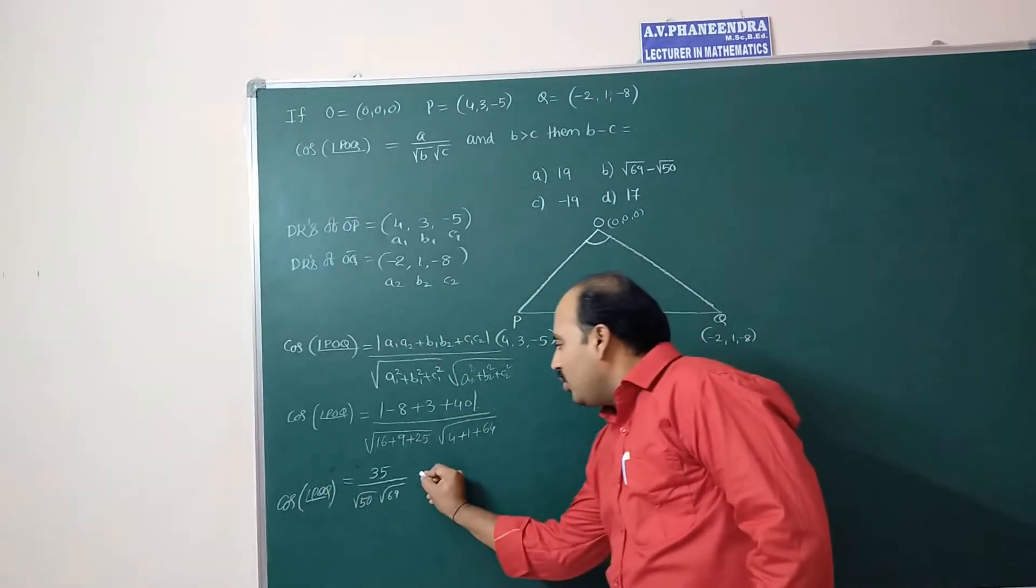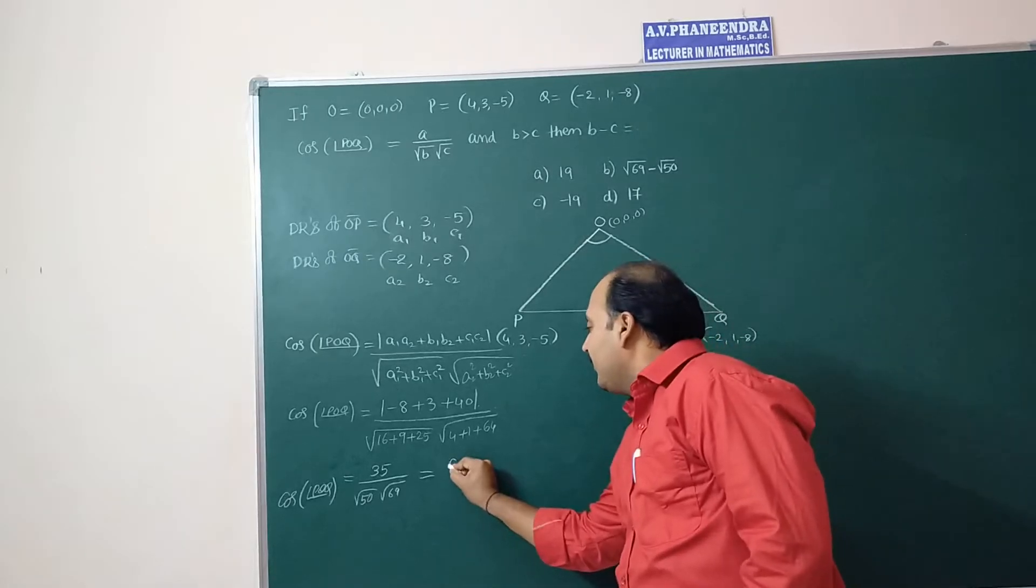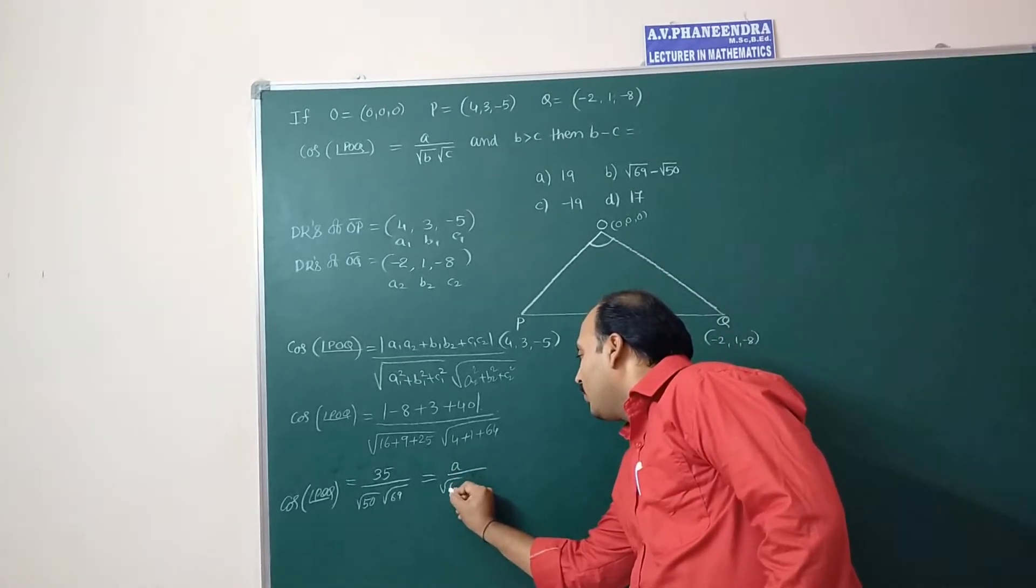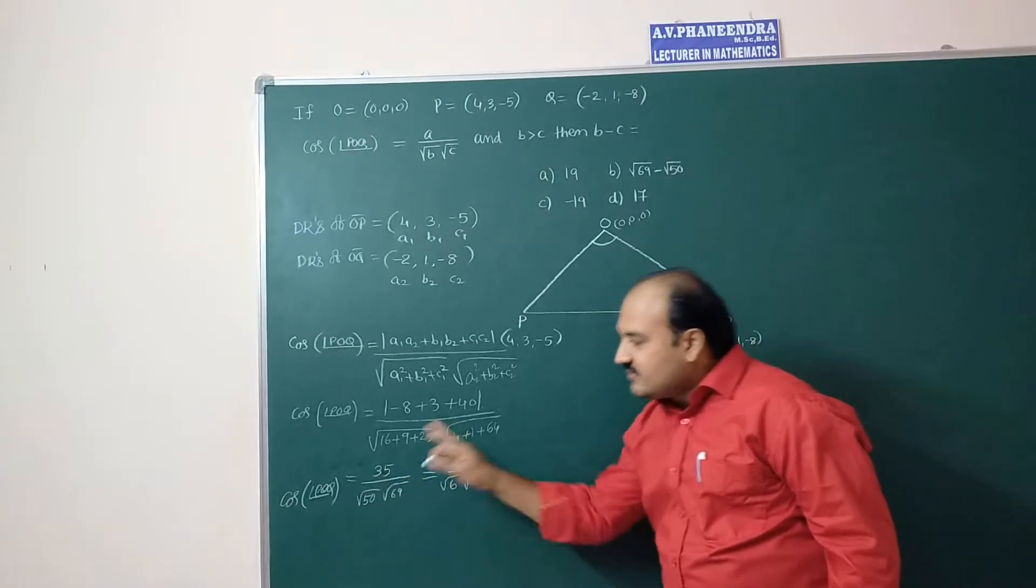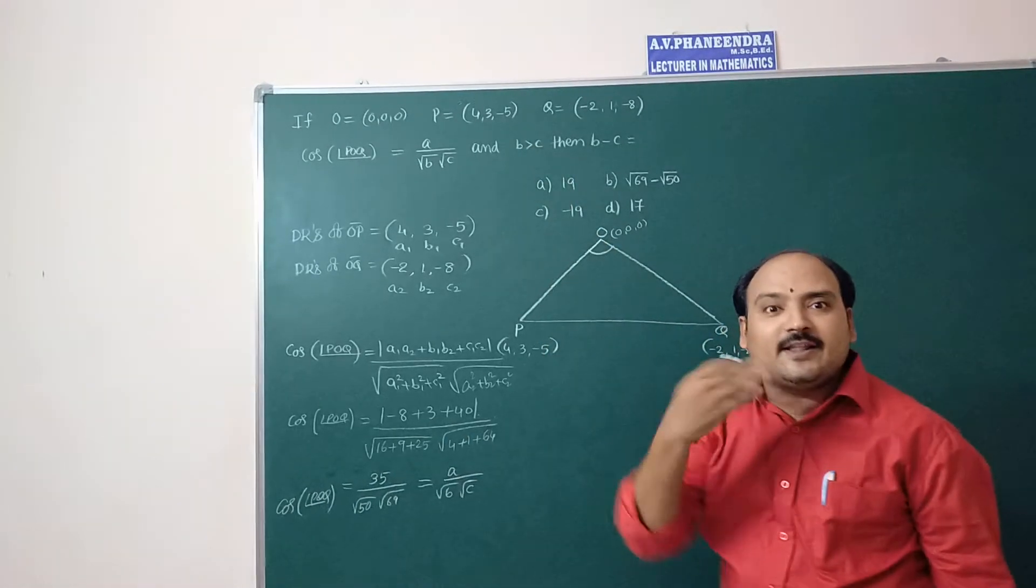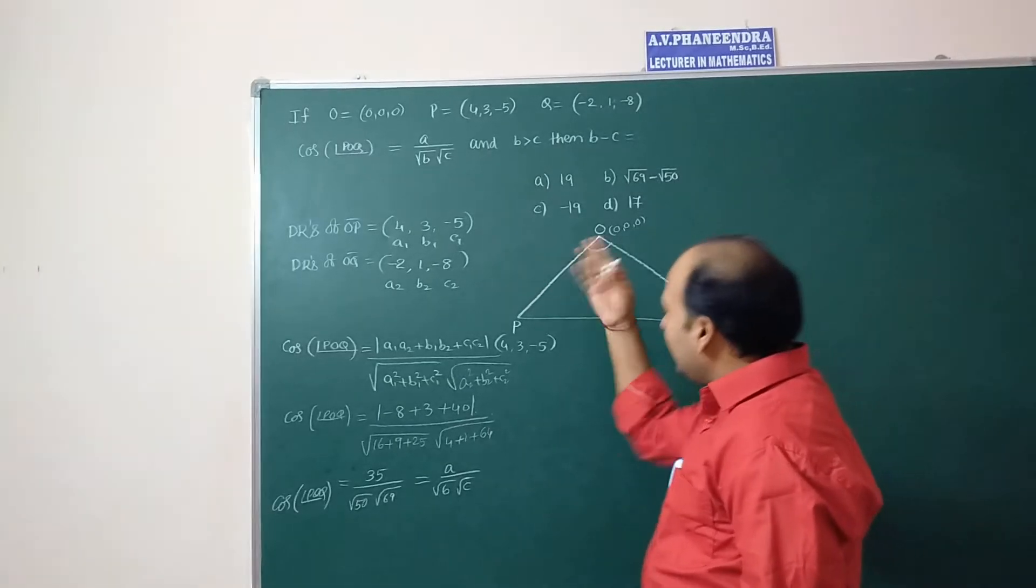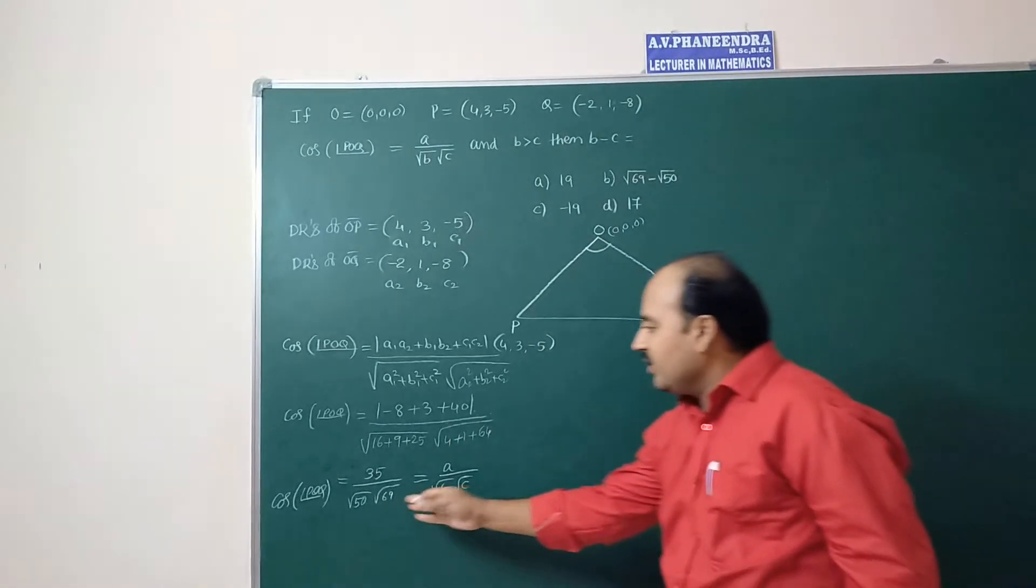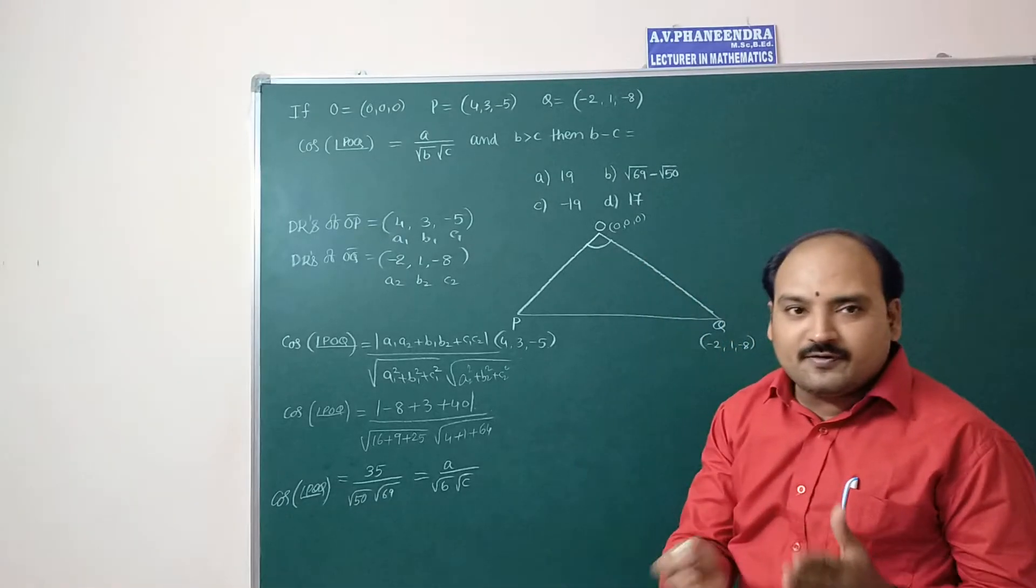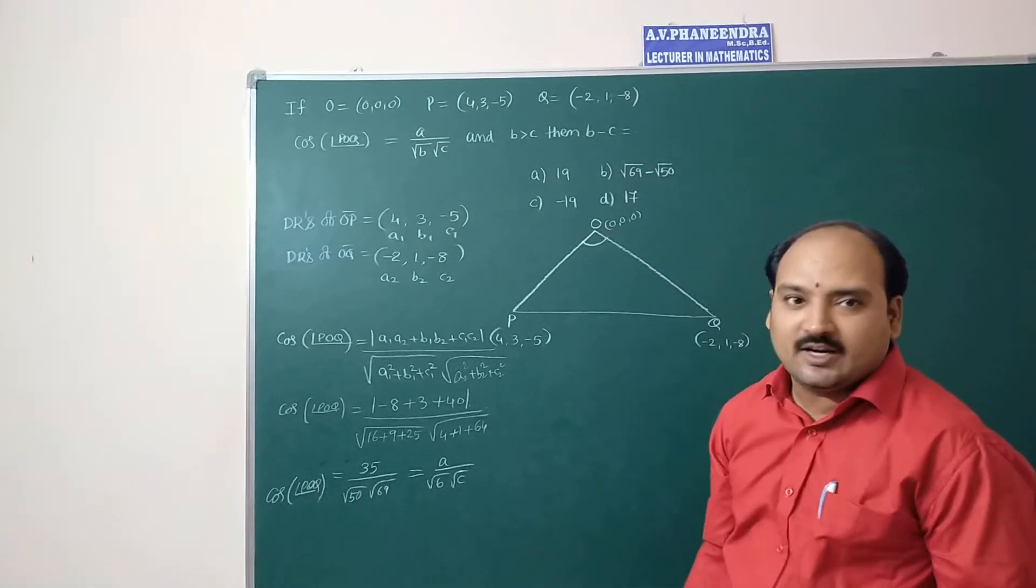This you have to compare with given value a by root b into root c. While comparing these values one condition is given b is greater than c. So b is greater than c means among these two which one is greater? Out of 50 and 69, 69 is greater.